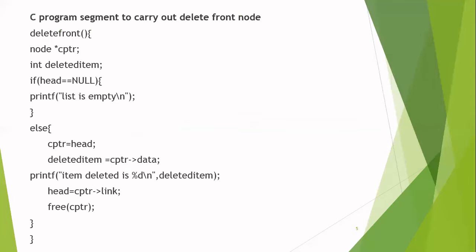Let us now discuss the C code to perform deletion operation at the front. I have created a function called delete. This function does not accept any parameter. Within this function, I have declared a pointer variable called CPTR, which is a current pointer variable of node type. I have also declared a variable called deleted_item to store information regarding the item that is deleted from the linked list. The data part of the node will be copied to this variable and displayed. Before performing deletion operation on the linked list, you have to check whether the linked list is empty or not.